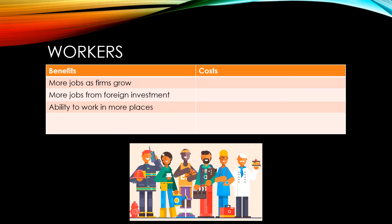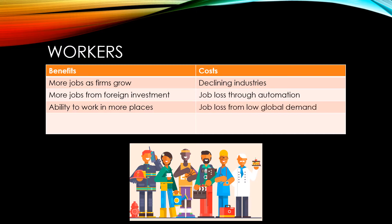Workers in declining industries may find that they lack the necessary skills to transition to newly formed industries, which may lead to long-term unemployment. Other workers may face job loss through automation as firms automate processes in a bid to cut costs and compete with overseas firms. Workers may also suffer from job insecurity, with slowdowns in global demand leading to further job losses. Immigration may lead to increased competition for jobs in developed nations and this may help to keep wage rates low.